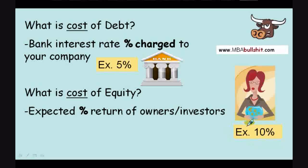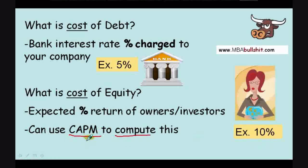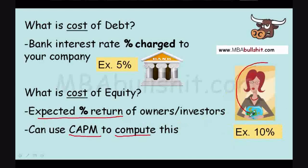However, in other problems it might not be as simple as 10 percent. In other cases, you might be given other information and would have to compute this amount yourself using the CAPM, or the Capital Asset Pricing Model, also known as the Cost of Equity formula, which I already talked about in my other video. But in this case, let's just pretend that we already know that the expected return — the expected profit of the owner or investor — is 10 percent.